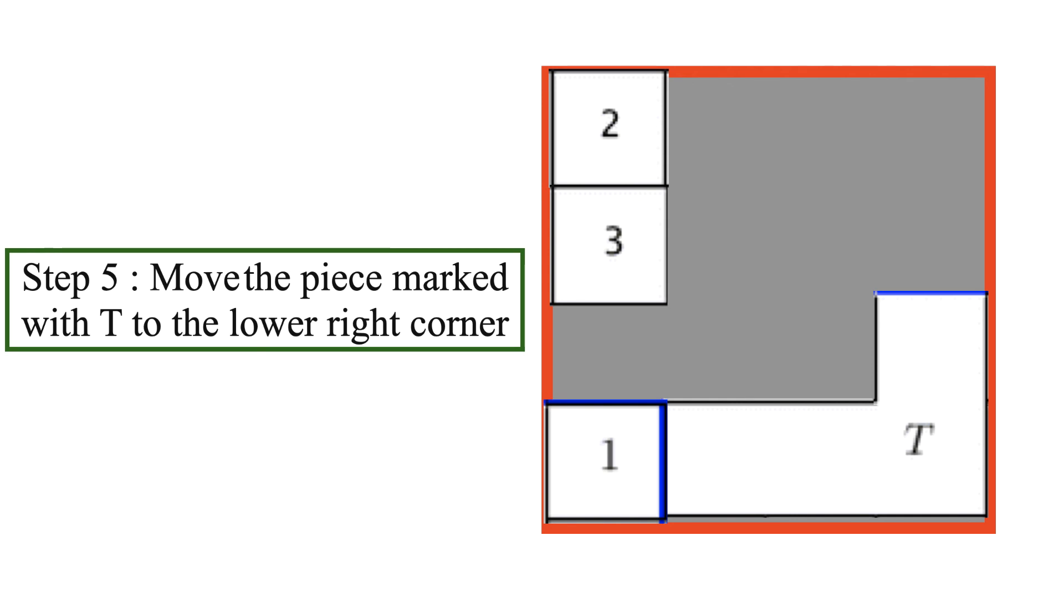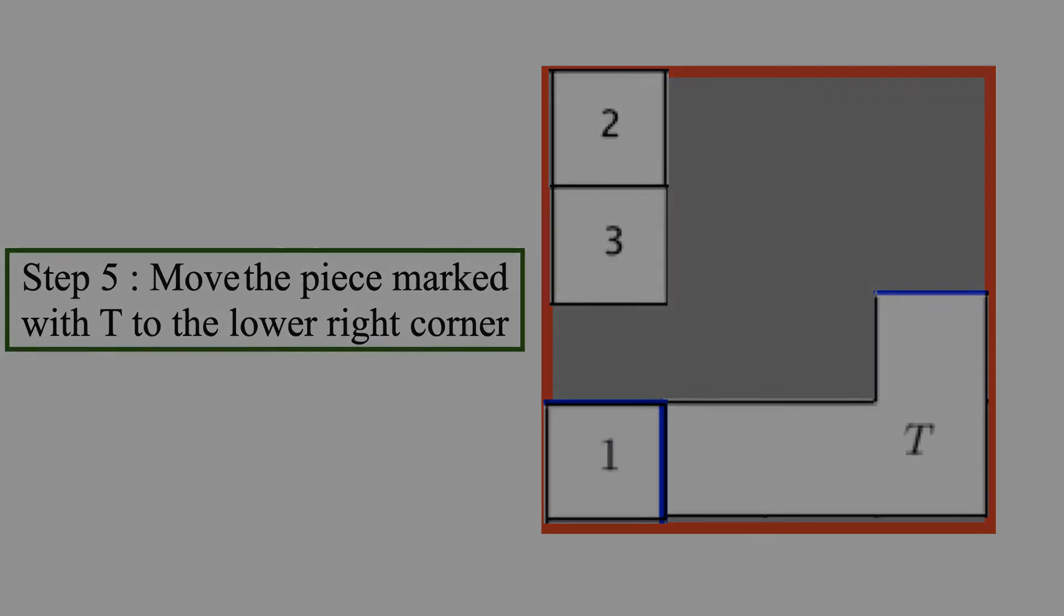By following these steps, you can move the piece marked with T to the bottom right corner in just 5 moves. That's all for this video. Let me know if you have any questions. I will try to address as soon as possible. Thanks for watching and thanks for your support.